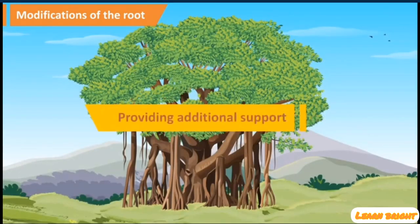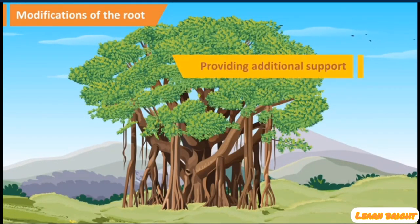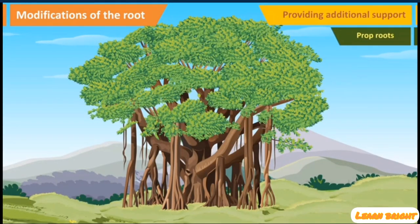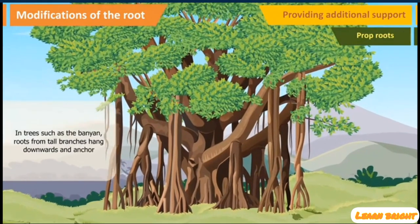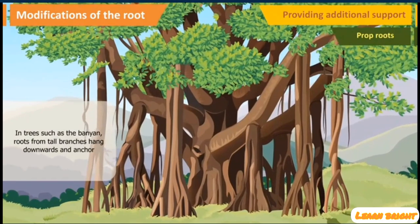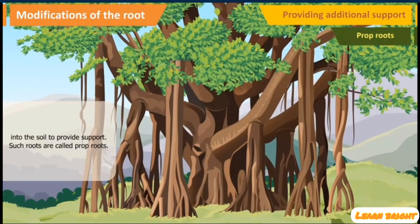Providing Additional Support: Prop Roots. In trees such as the banyan, roots from tall branches hang downwards and anchor into the soil to provide support. Such roots are called prop roots.